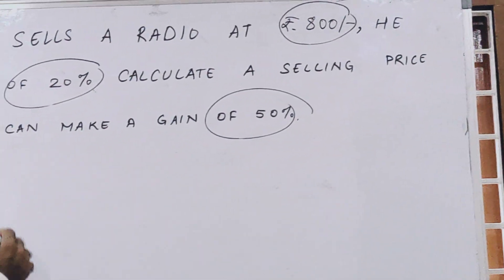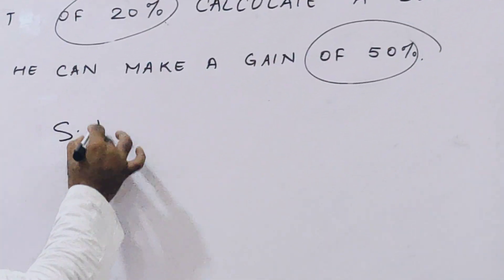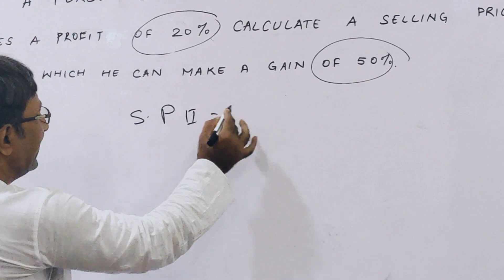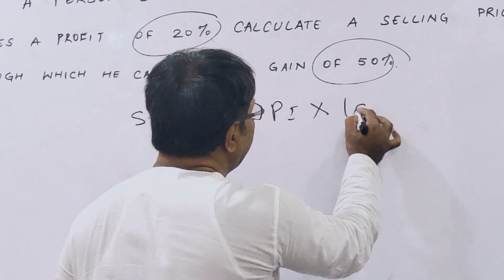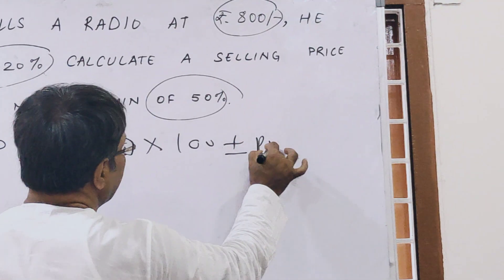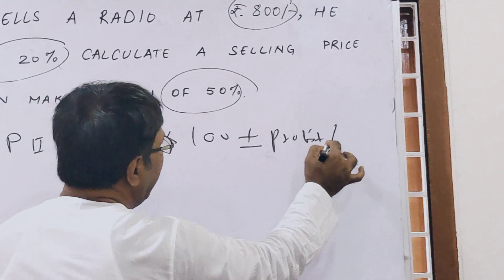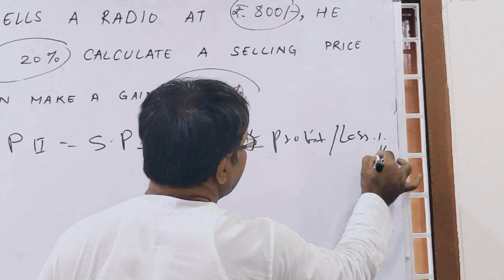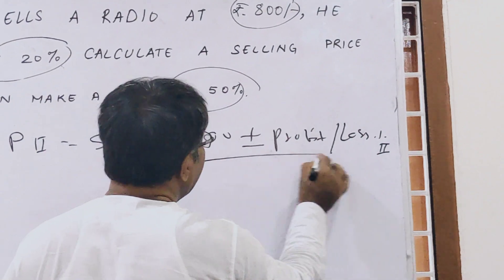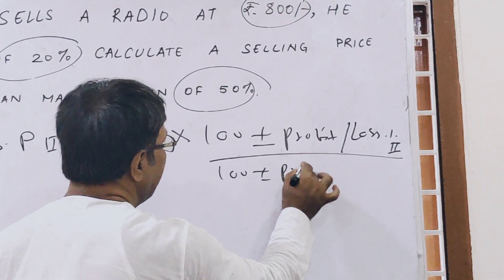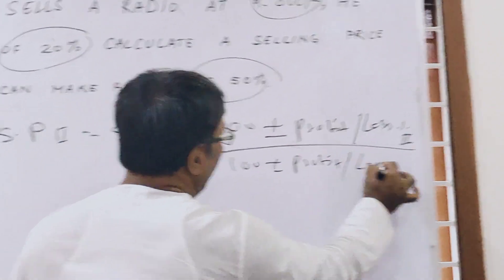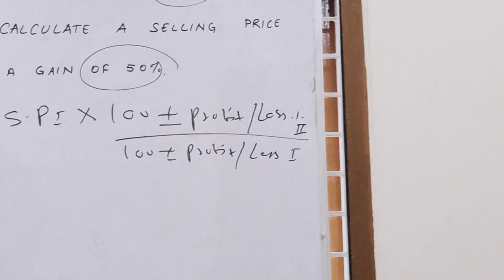For this type of question there is a trick. Selling price second equals selling price first times 100 plus/minus profit and loss percent second, that is what we need, divided by 100 plus/minus profit and loss first which is given.